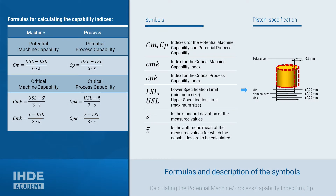The formulas for the machine and process potential are shown on the left-hand side, likewise for the critical capabilities. Briefly on the abbreviations used: CM is the index for the potential machine capability; CMK is the critical machine capability index; CPK is the index for the critical process capability. LSL and USL are the lower and upper specification limits — the minimum and maximum size of the piston. S is the standard deviation of all measured values and X-bar is the arithmetic mean of the values for which the capabilities are to be calculated.